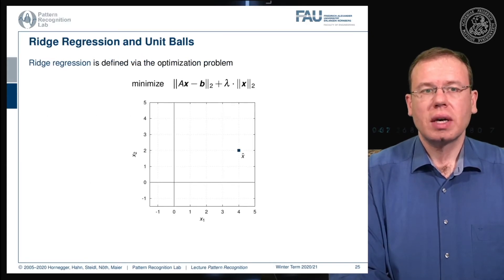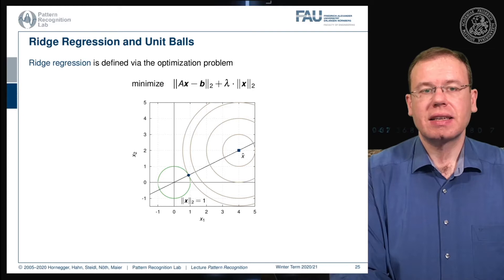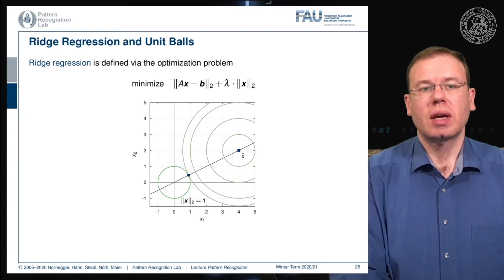Let's look into the ridge regression and unit balls. We have the minimization of Ax minus b in the 2-norm plus lambda times the 2-norm of x. Let's visualize this with the unit ball - the unit ball of x would be exactly this circle here. We can gradually increase the circle, and if you want the norm exactly to be one, you get the hit here, and this will be the solution for your respective optimization problem.